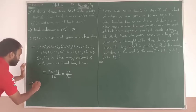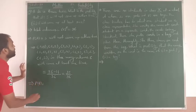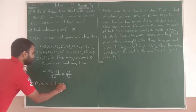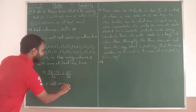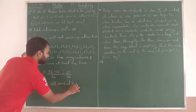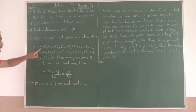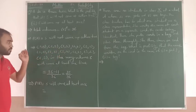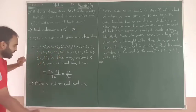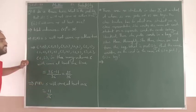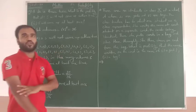And second one, P(B): 5 will come at least once. 5 will come at least once means one time or both times. There are 11 chances that we have already written. So 11 by 36 is the answer.